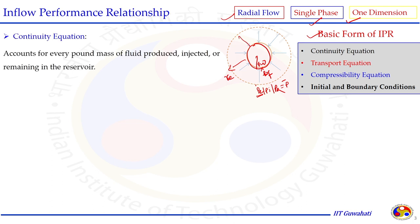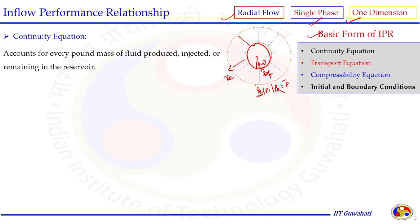In radial flow, fluid from all directions comes towards the production well. The radius of the production well is R_w, the radius of the reservoir is R_e. The pressure at the wellbore is P_wf, and the reservoir pressure can be called P_E, P_I, or P_R — the average reservoir pressure. To set up the basic form of the IPR we have to start from the continuity equation, which accounts for every pound of mass fluid that is produced, injected, or remaining in the reservoir.